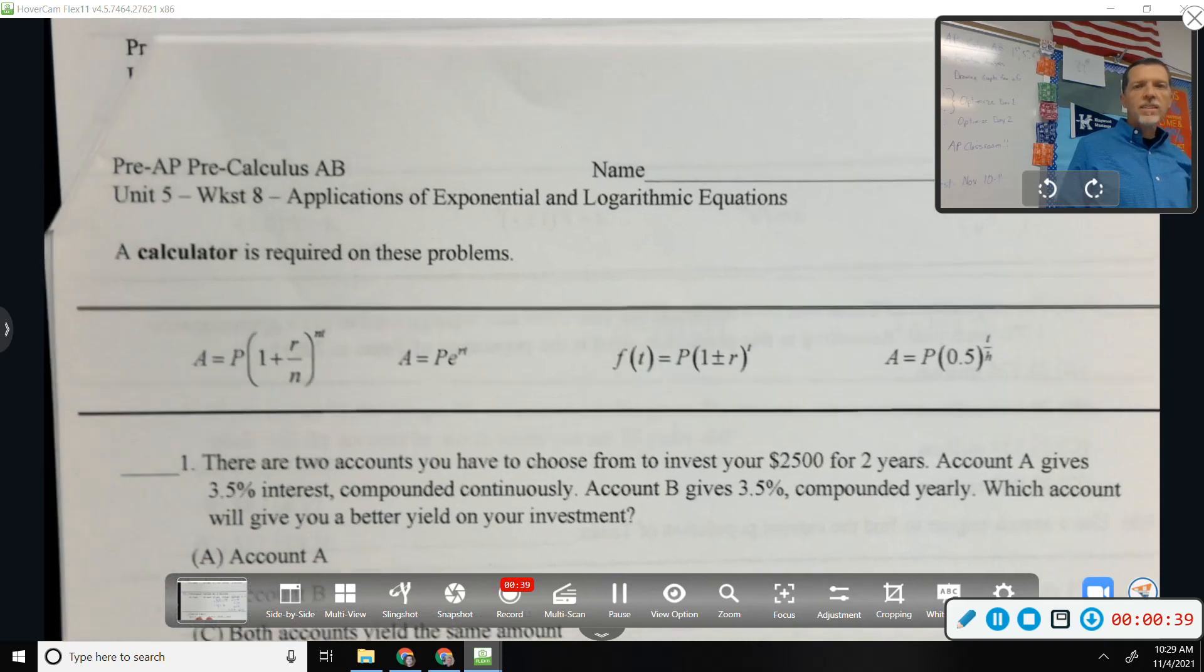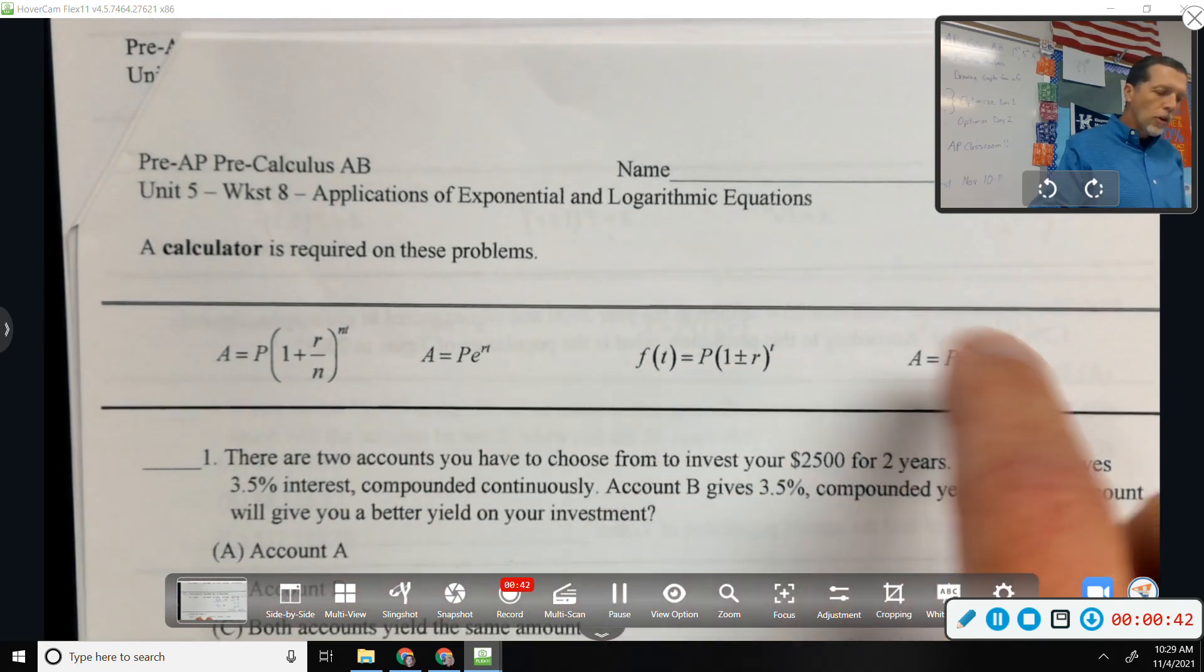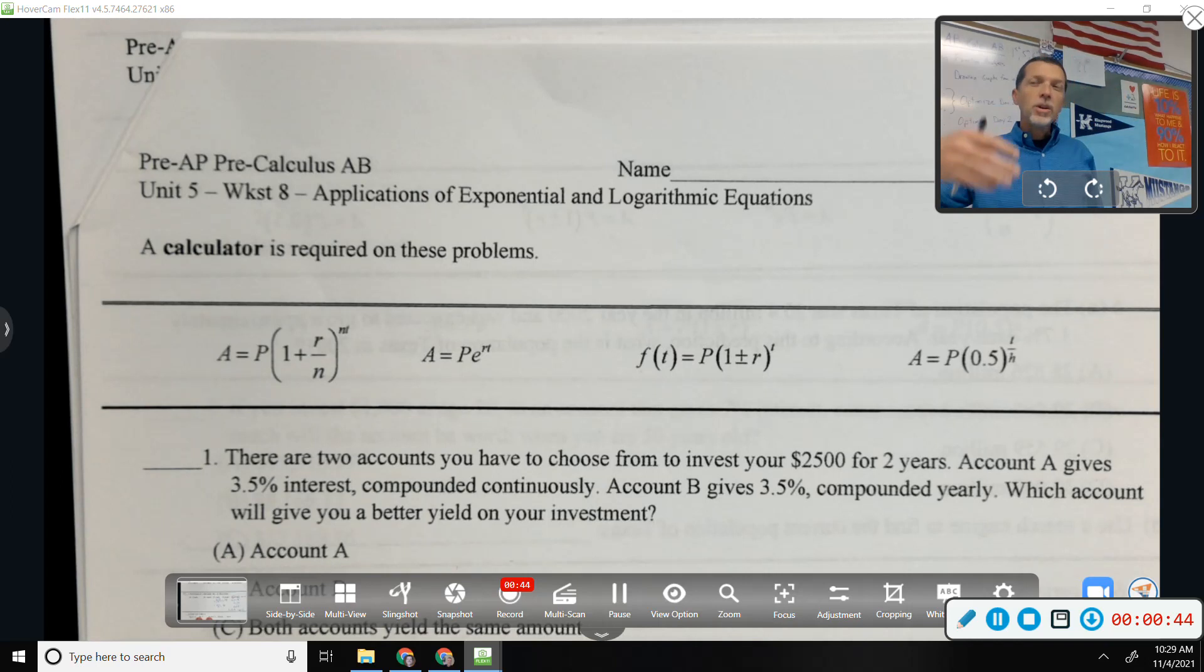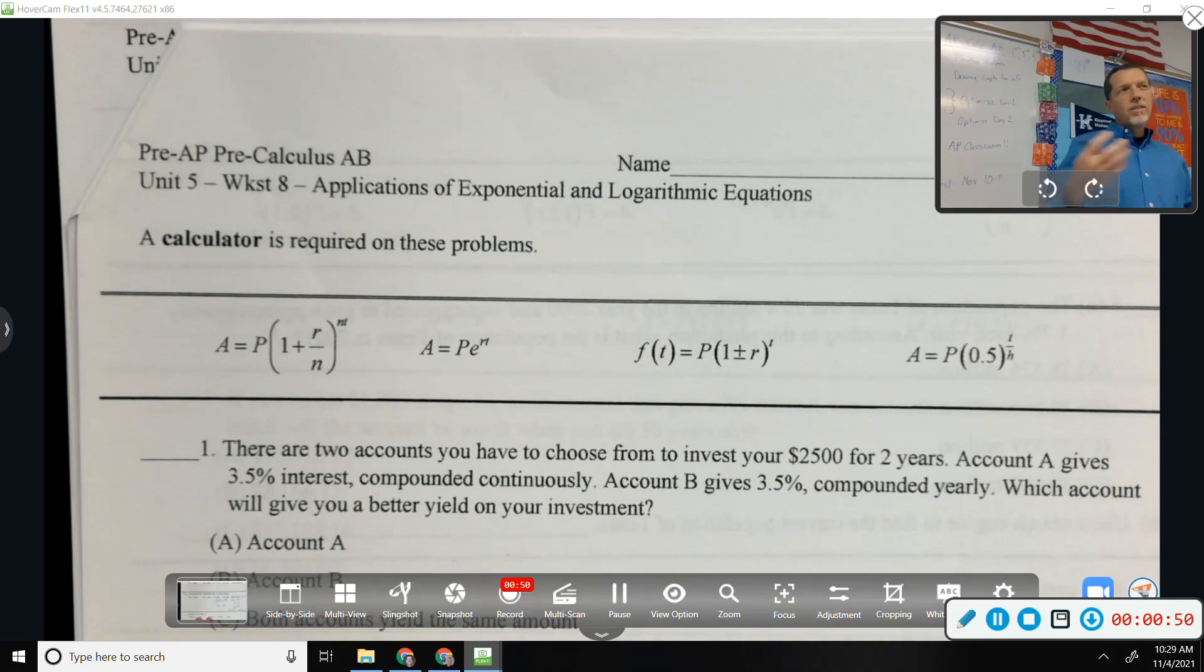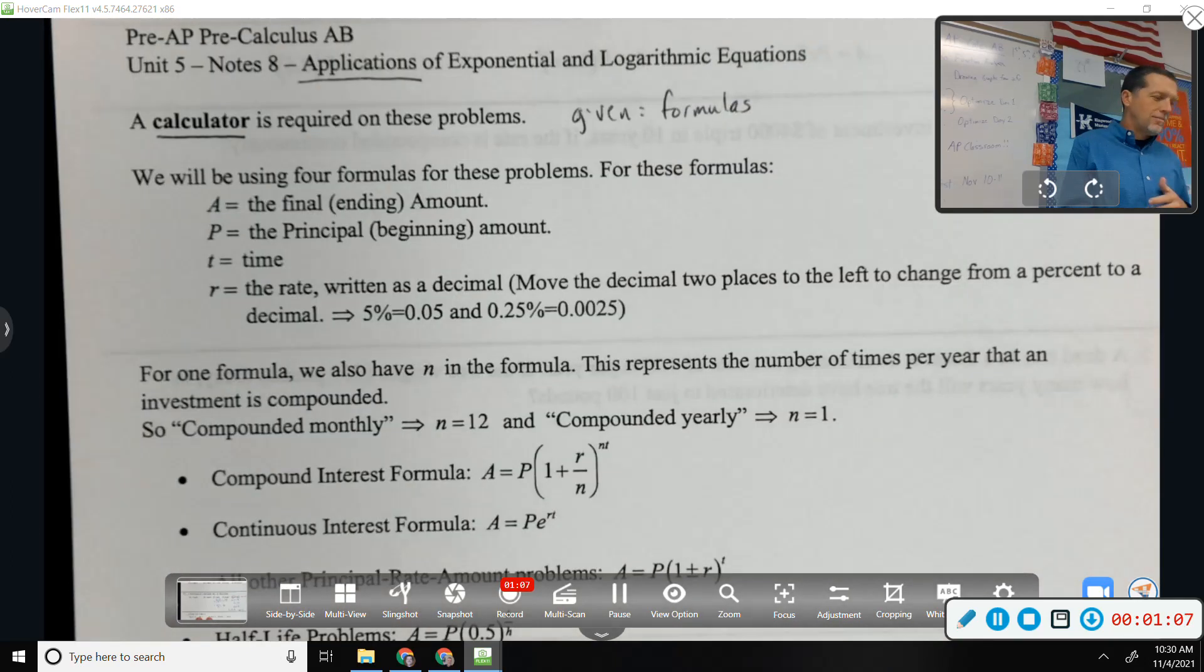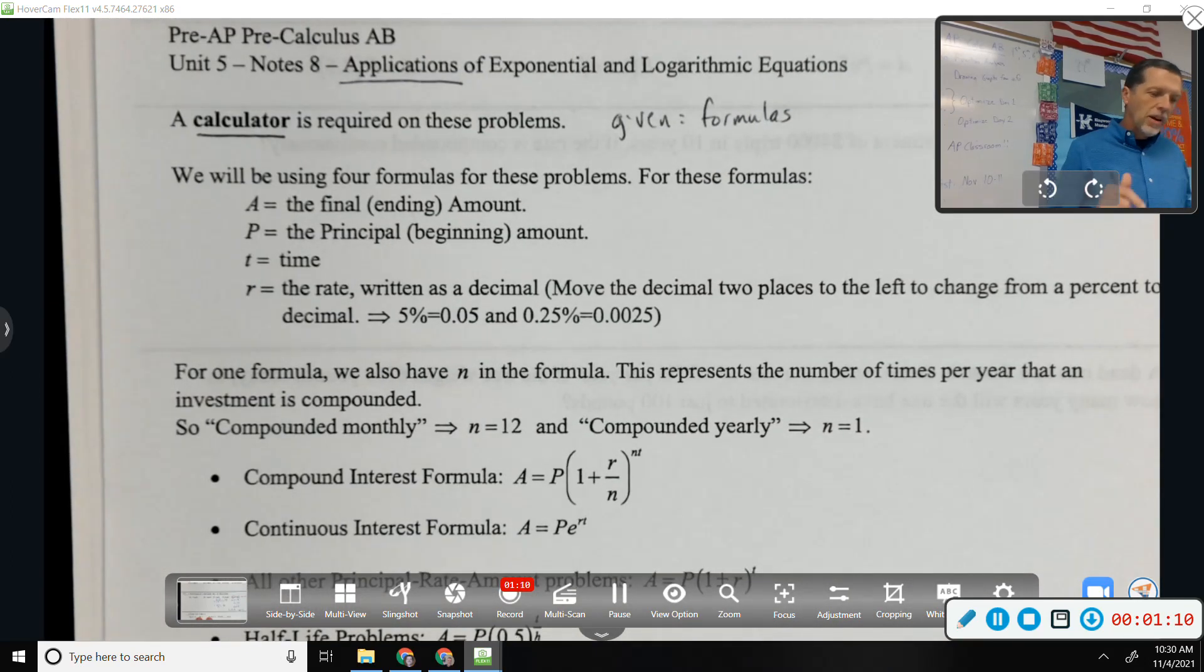The good news is, well I guess two things are good news. A calculator will be required and provided, and we will give you the formulas. I think it's four formulas at the top. We'll give you the formulas you need, but you'll have to be able to pick out which one to use. So it's kind of a halfway point versus memorizing everything. Here are the formulas, can you figure out where they go?